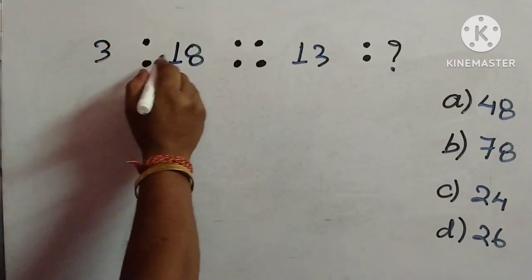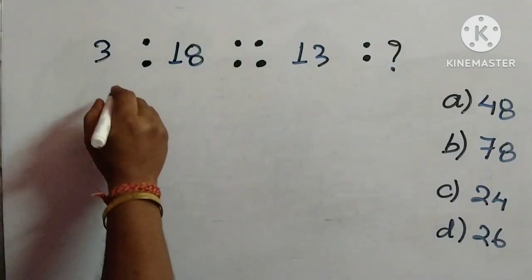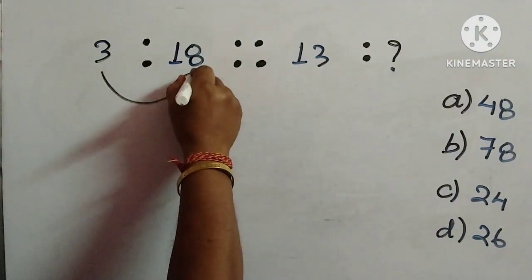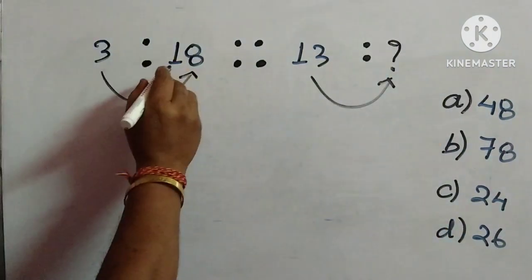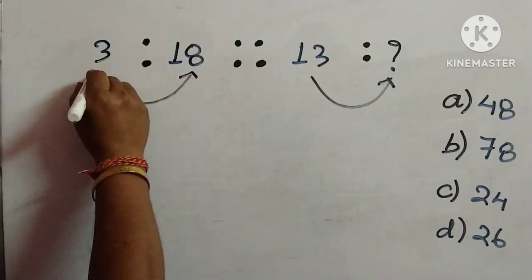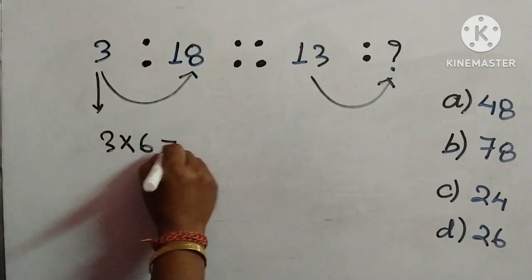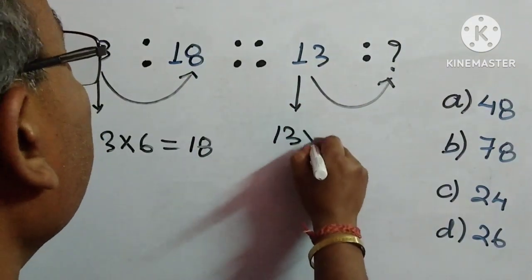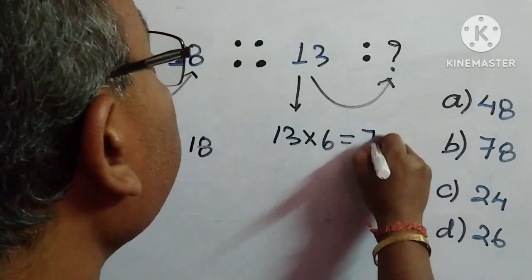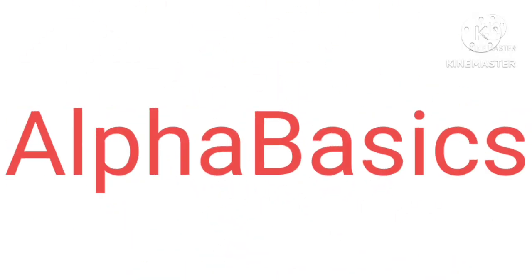Next question: 3 is to 18 equals 13 is to what? As usual, we derive 18 from 3 first. This one is simple: 3 multiplied by 6 is 18. We apply the same to 13: 13 multiplied by 6 is 78. So 78 is the answer — option B. That's all for today, hope you have understood. Thanks for watching.